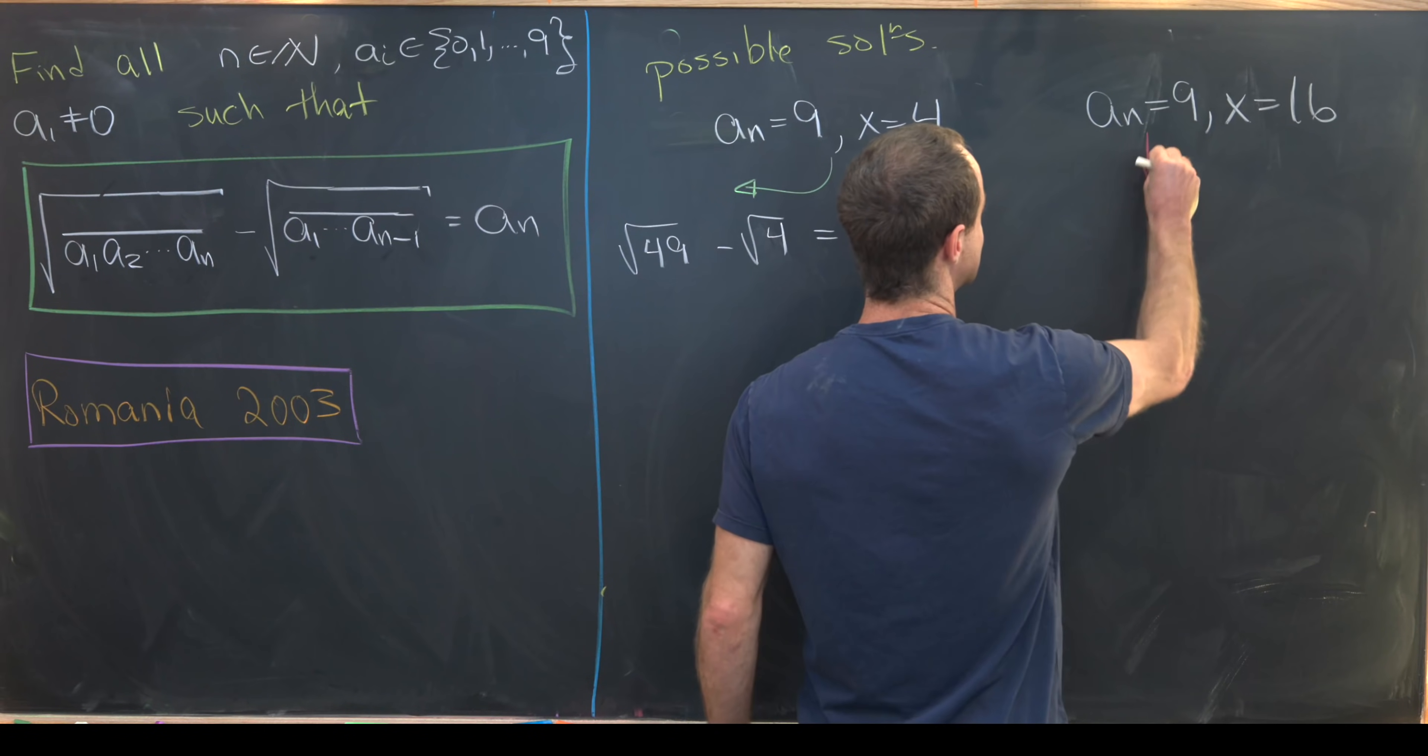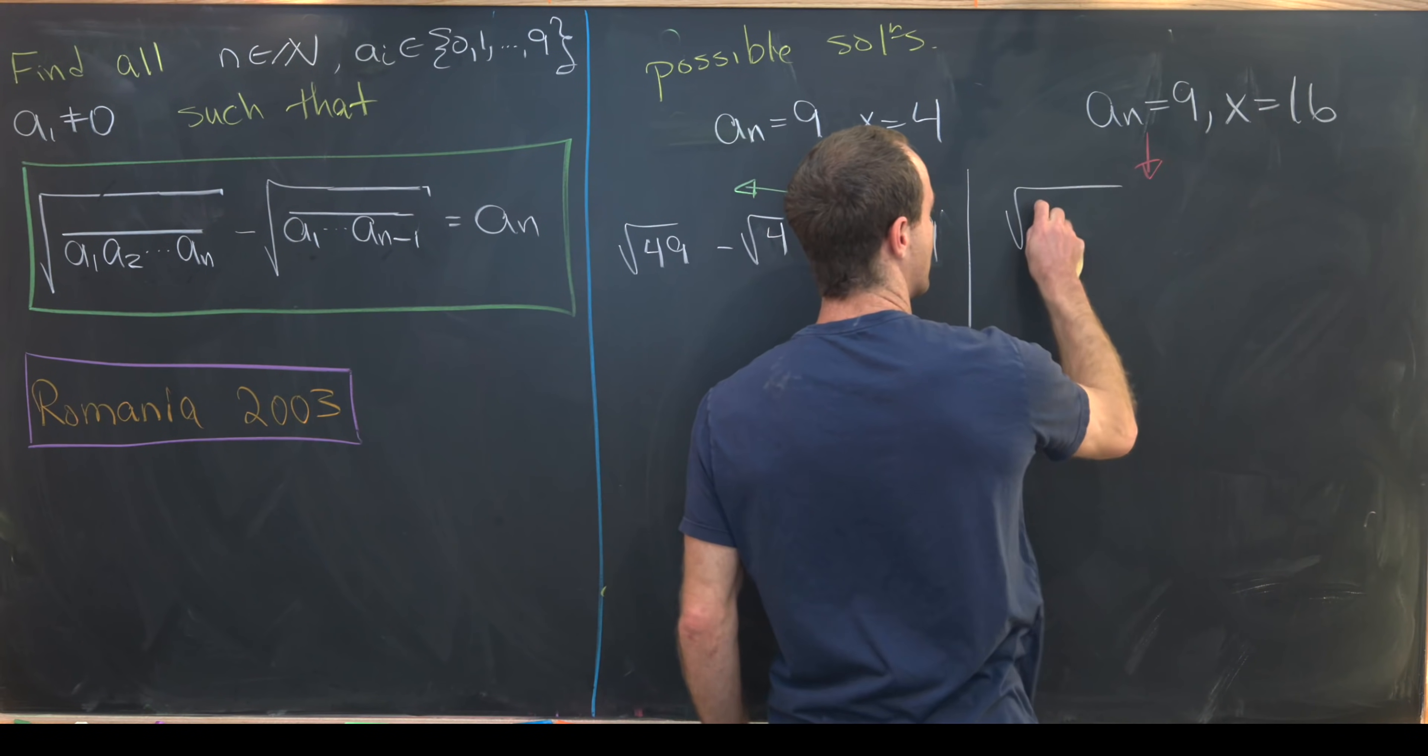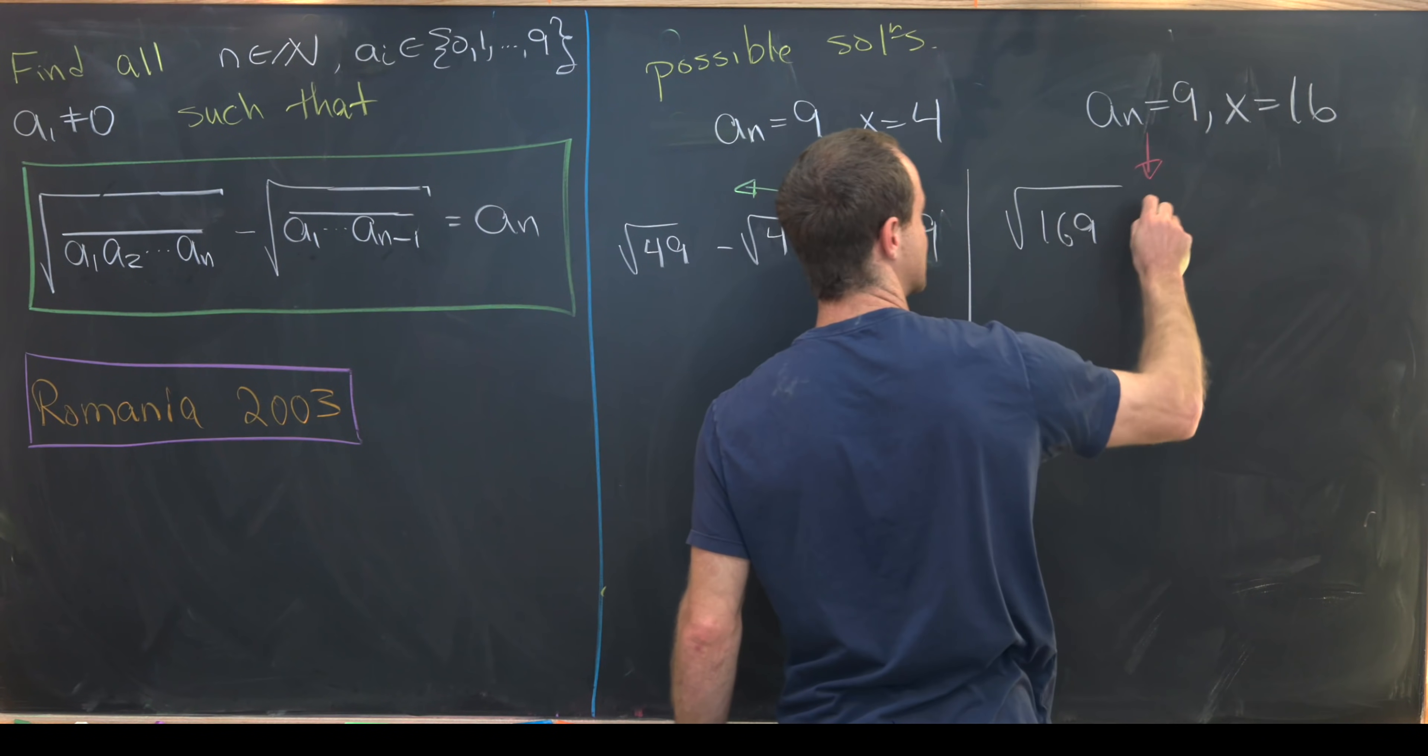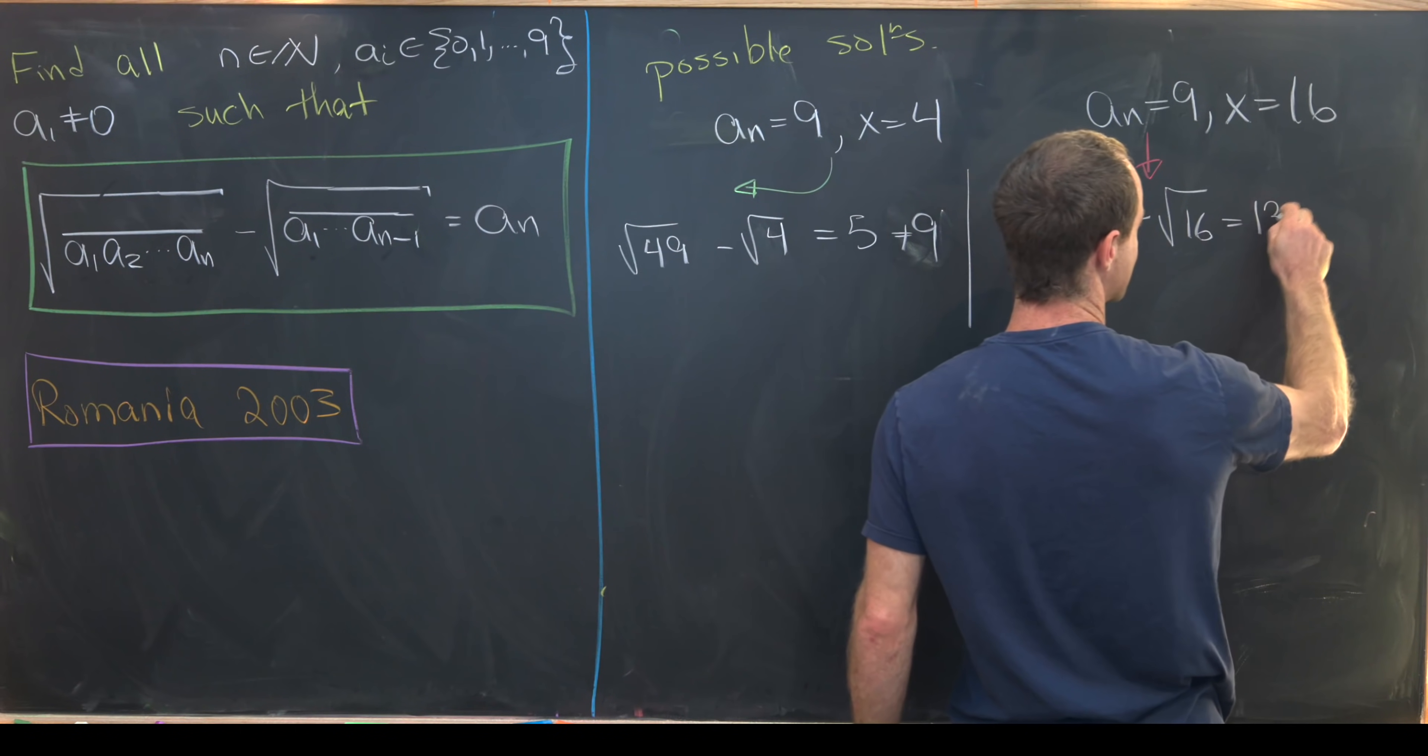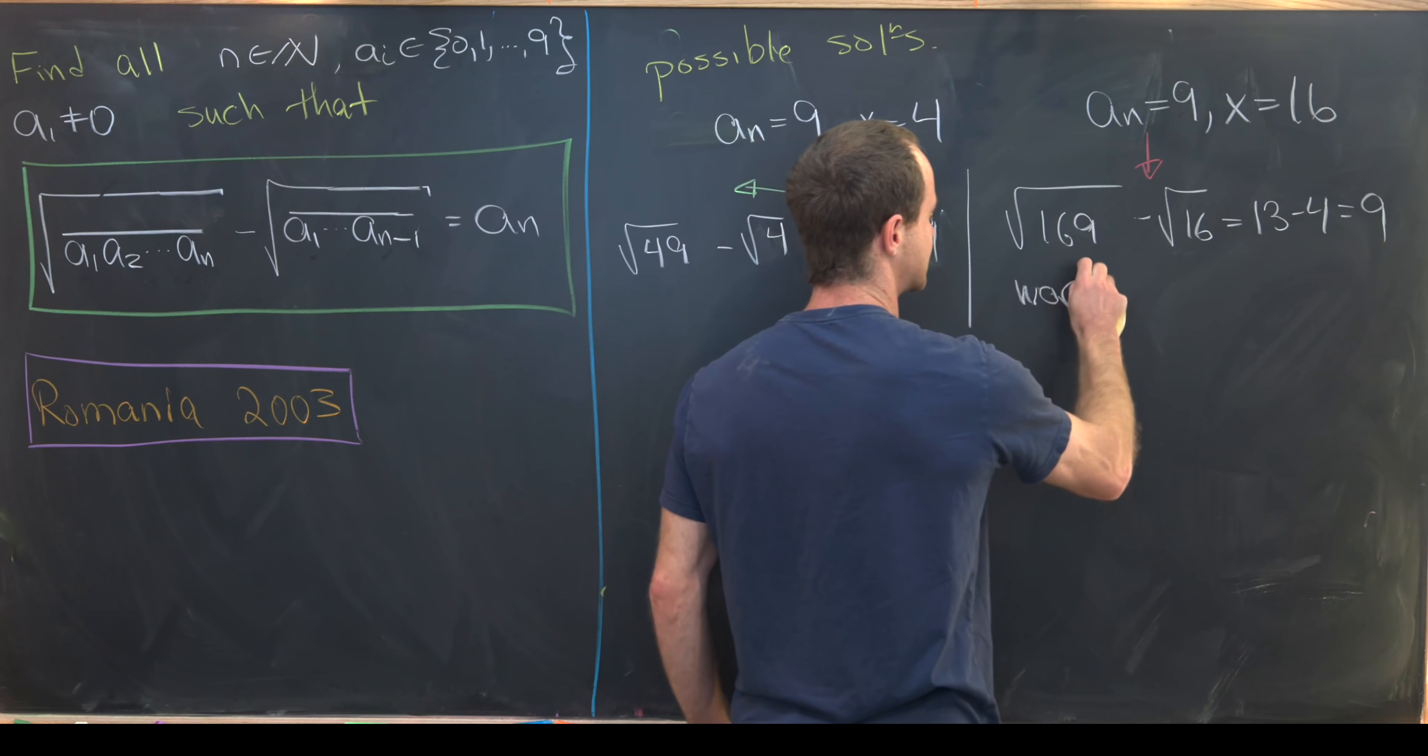Well, hopefully we'll be satisfied by this solution. So we'll have the square root of 169, so that'll be x with this extra digit, minus the square root of 16. We'll notice that's 13 minus 4, which is equal to 9. So this works.